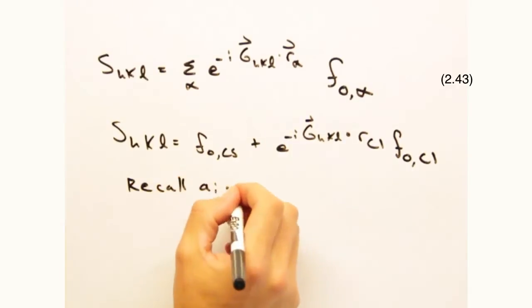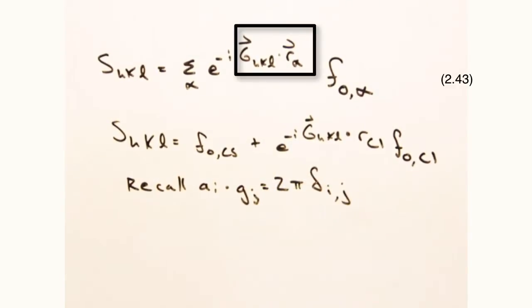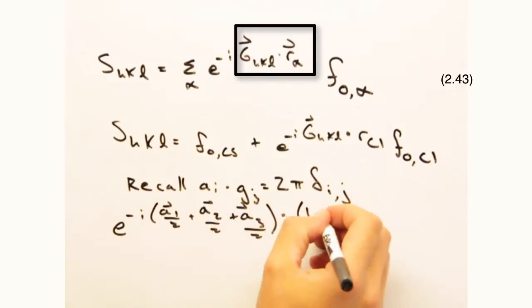Yeah, and so what will the second atom in the summation do? Well, in that case, g sub hkl dot r alpha gives the following.